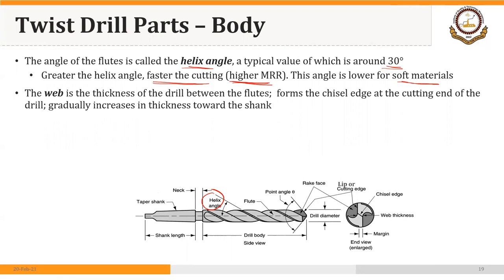The web is the thickness of the drill between the flutes. If you hold the drill bit in your hand so that the tips of your fingers are holding the flute, whatever you have in your hands is the thickness of the drill and that is called the web. It forms the chisel edge at the cutting end. This is the web or thickness of the web, and it gradually increases in thickness toward the shank.